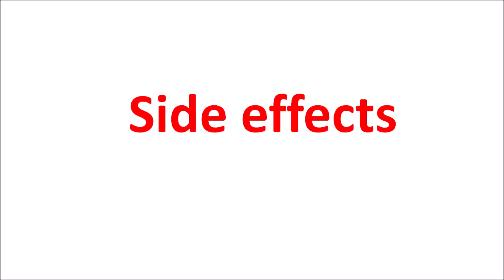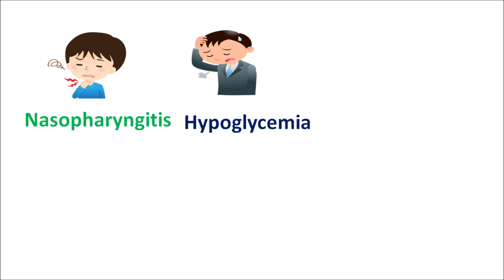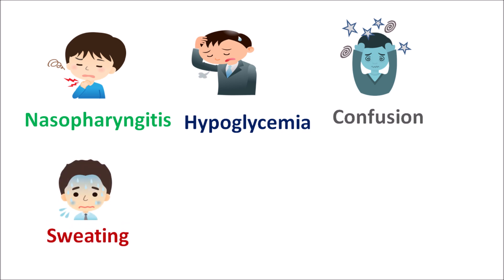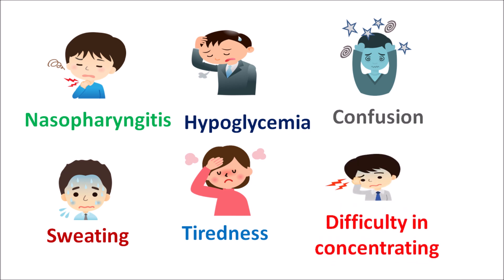The important side effects of linagliptin mainly include nasopharyngitis — it can produce sore throat and cold-like symptoms. An important side effect is hypoglycemia because of increased insulin secretion. Due to hypoglycemia, linagliptin can produce various other side effects like confusion, excessive sweating, and tiredness in patients, and it can even produce some difficulty in concentrating so that the patient may have a confused state.